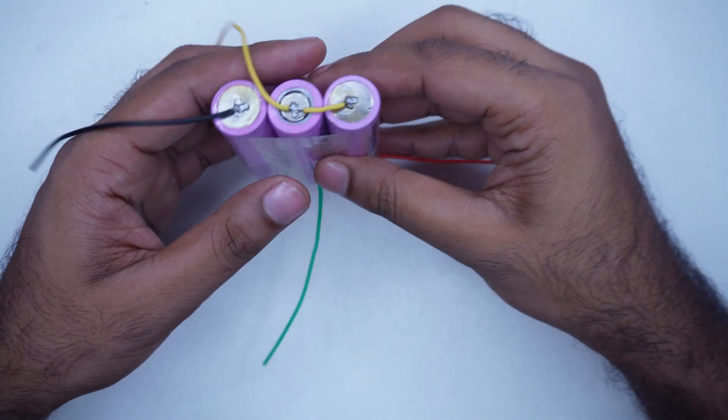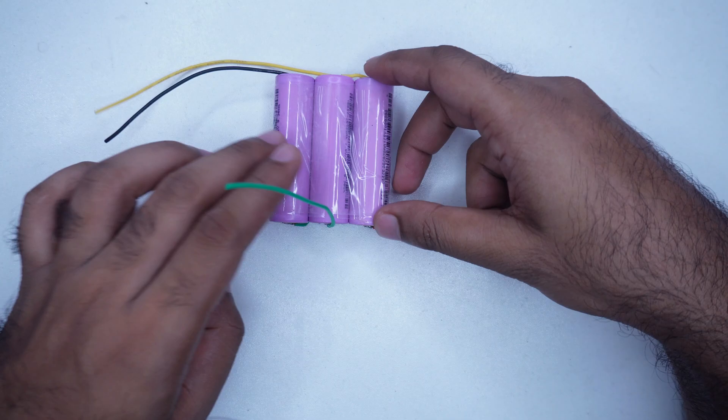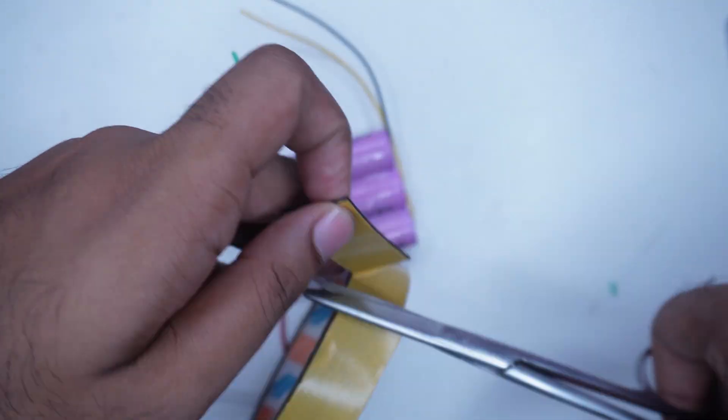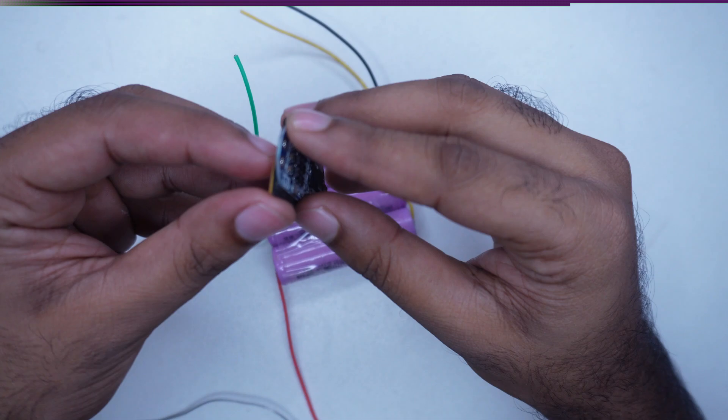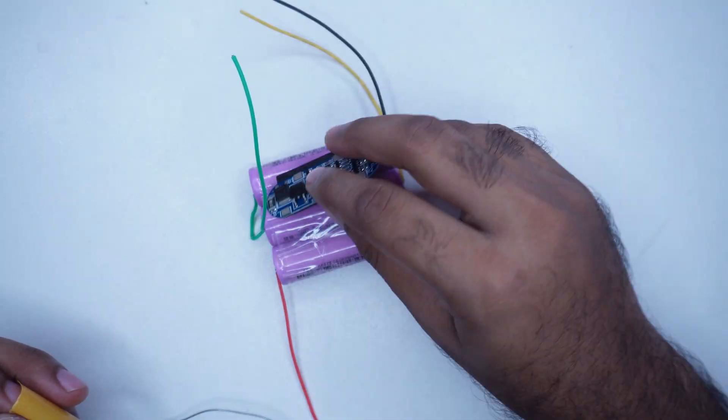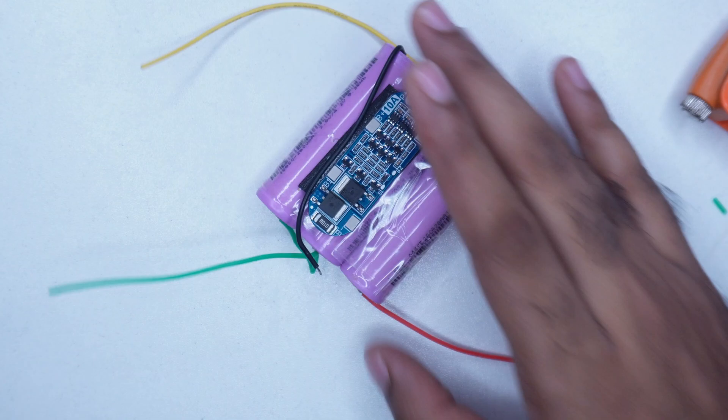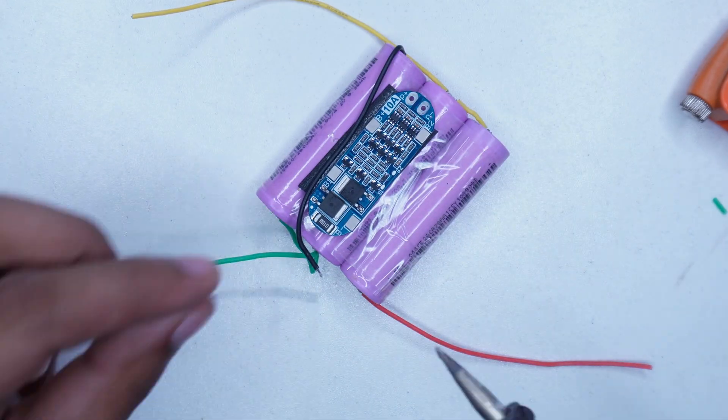All our wires are soldered. Now only connection with the BMS circuit has to be done. First, I use double-sided tape to mount the circuit to the battery pack. Now we just solder all the wires at the correct points as per the diagram.